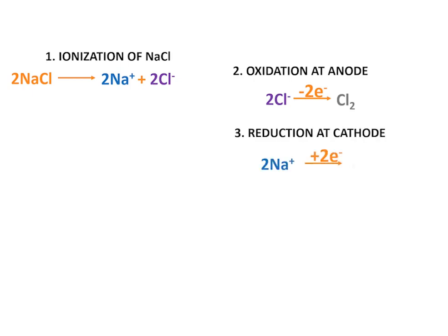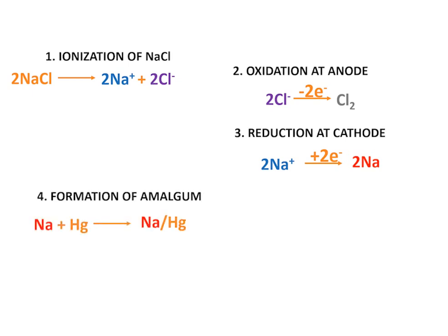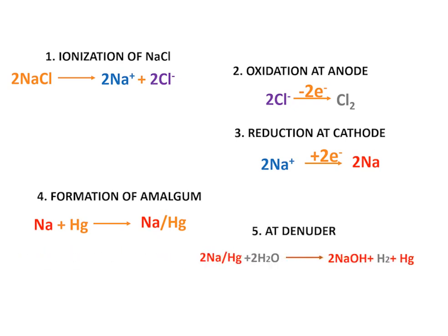Sodium ions are reduced at the cathode by the gain of electrons and form metallic sodium. This sodium metal mixes with the liquid mercuric cathode resulting in amalgam. The amalgam flows to the denuder where it reacts with water forming sodium hydroxide and hydrogen gas.